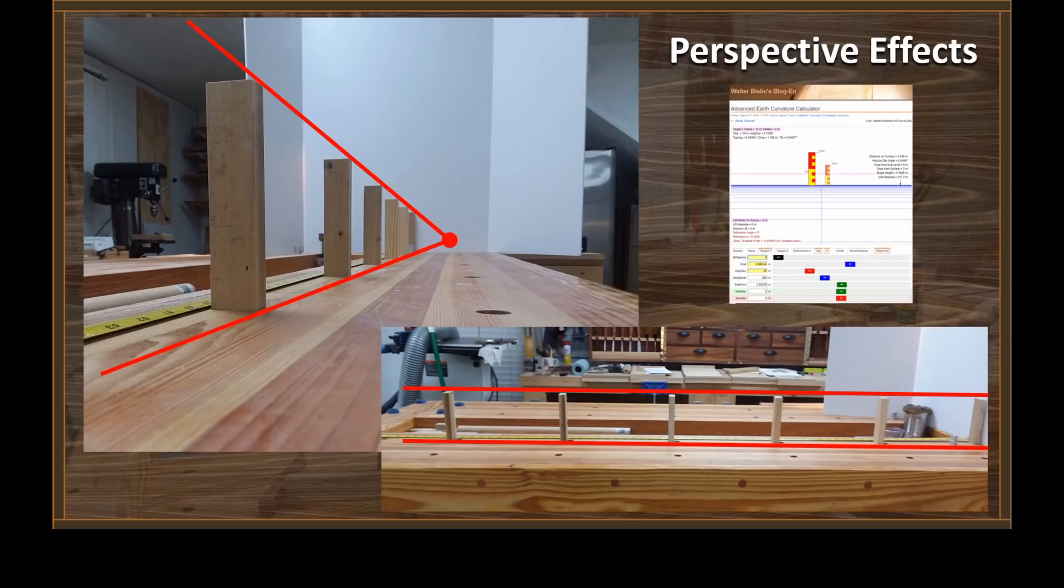You can look at the curve calculators like the one Walter Bislin has, and he shows that effect. There you see two imaginary obstacles that are each 10 meters in height, but they are different distances away from the observer. And so you see the effect of perspective just like you see in that first picture.